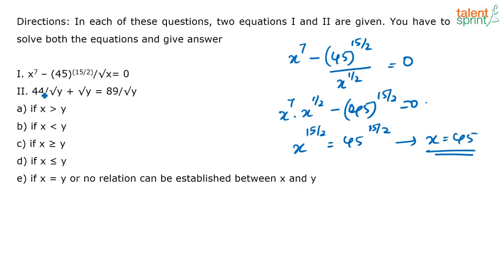Now next one: 44 by root y plus root y is equal to 89 by root y. So if you see here in this question again, if you take the LCM, then what happens? You have 44 plus y divided by root y, that is equal to 89 by root y.